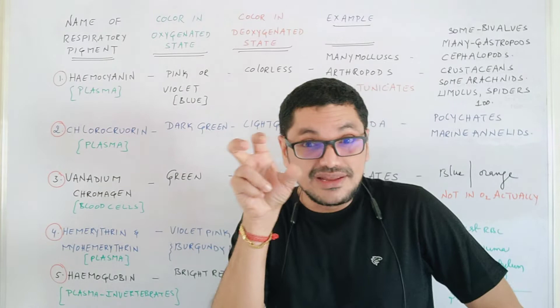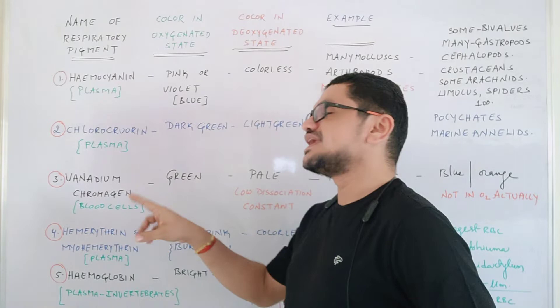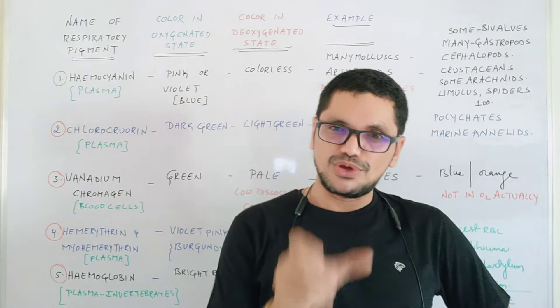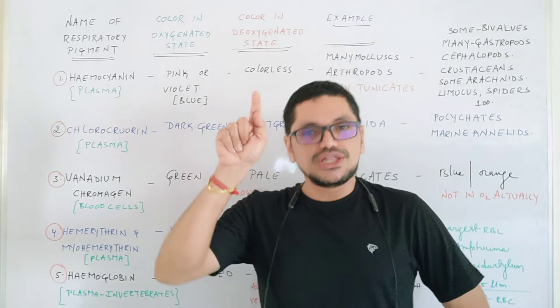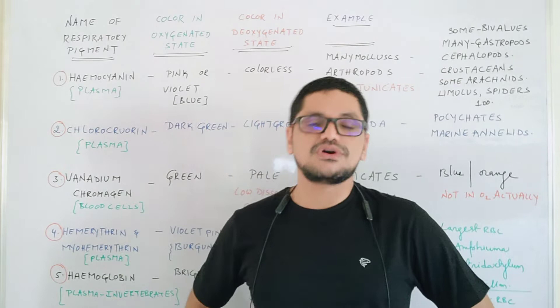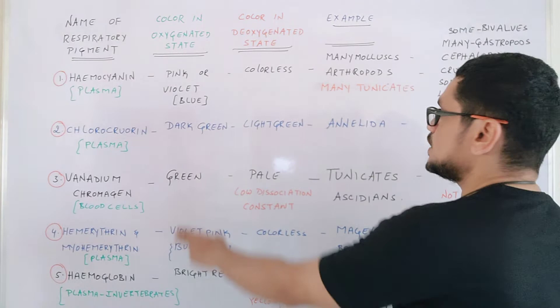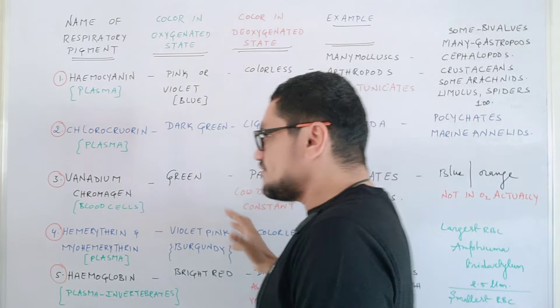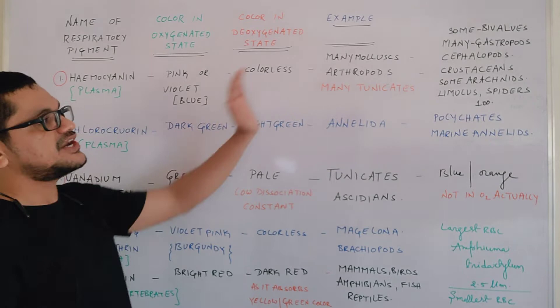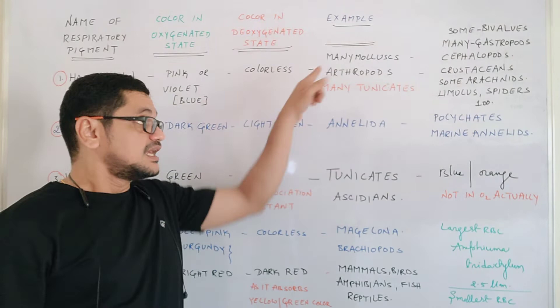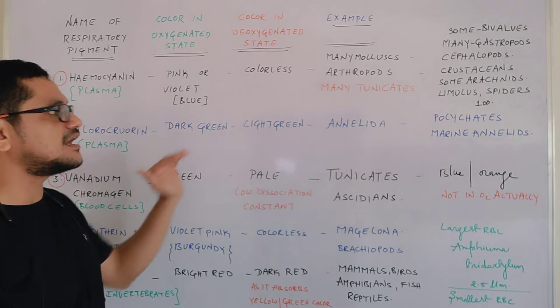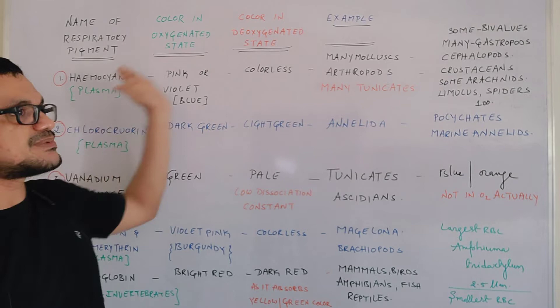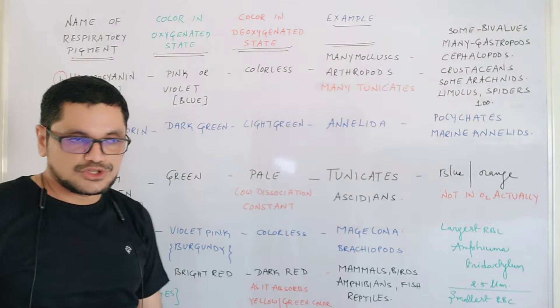The next one is vanadium chromogen. Vanadium chromogen is a respiratory pigment generally present in the blood cells of urochordates. Uro means tail, chordates means having a notochord — in those animals where the notochord is restricted to the tail region in the larval stage they are called urochordates. The respiratory pigment is vanadium chromogen and it is green in color. It is seen in tunicates, though many tunicates also exhibit hemocyanin like many mollusks and arthropods.